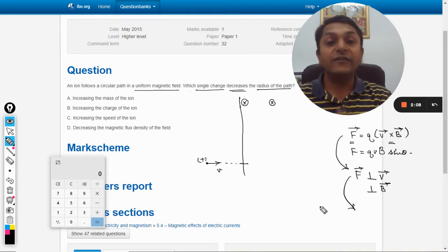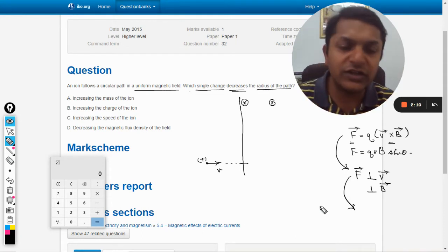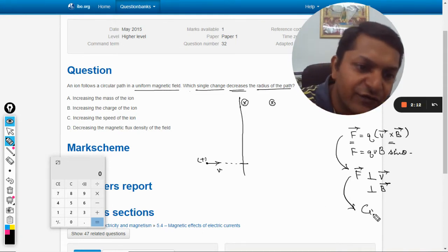Now this is a condition where force is perpendicular to the velocity vector. This is a condition for circular motion.